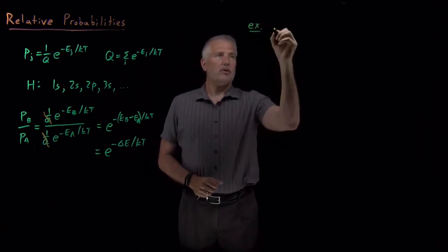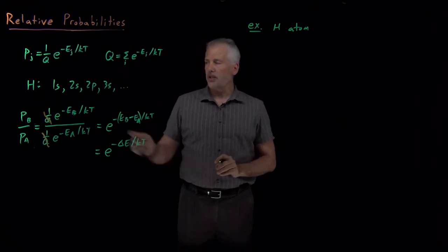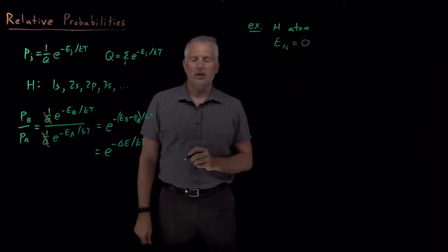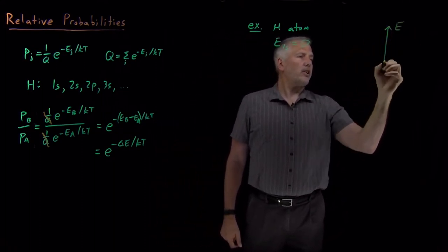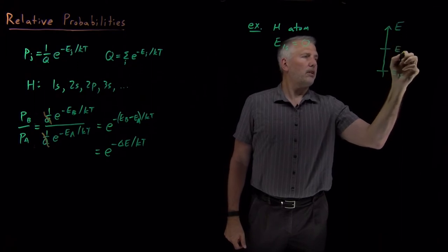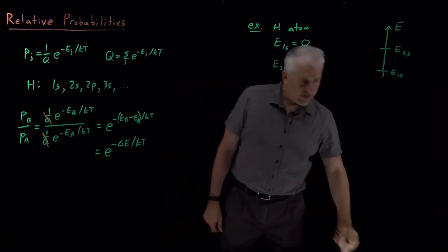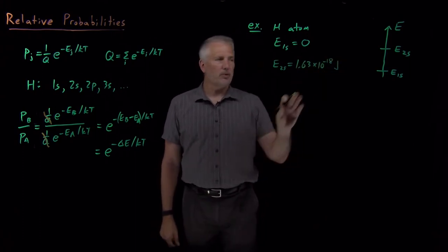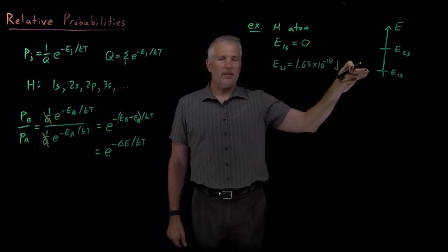Let's apply this to the hydrogen atom example. Consider an electron in a hydrogen atom in some particular orbital. I'll set the energy of the 1s orbital to zero — that's my zero of energy. The 2s orbital has a higher energy. I'll draw an energy diagram: the 1s orbital is at the bottom, and the 2s orbital is higher, with an energy of 1.63 times 10 to the minus 18 joules above the 1s.